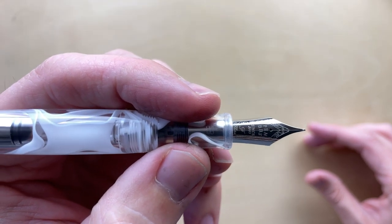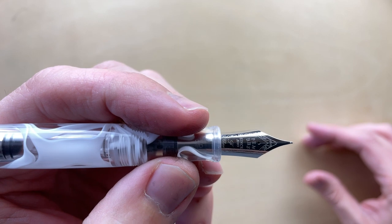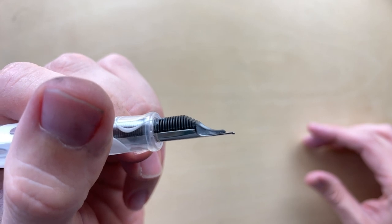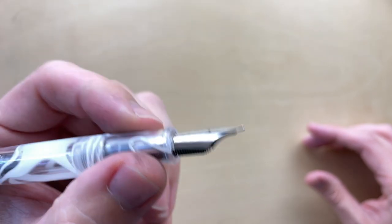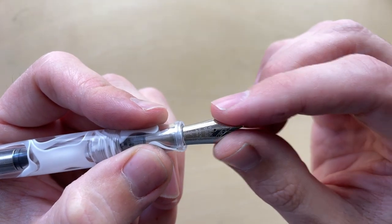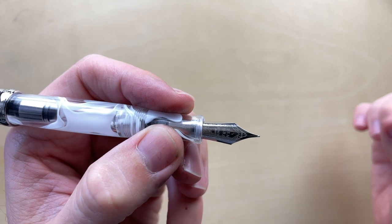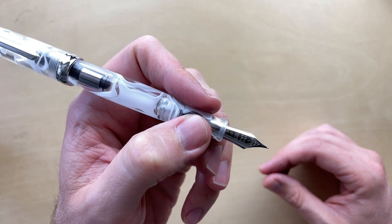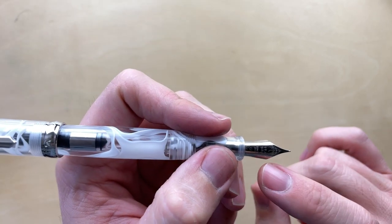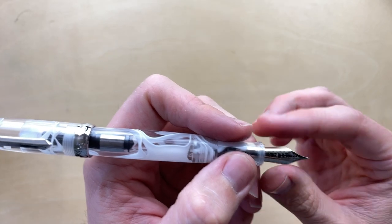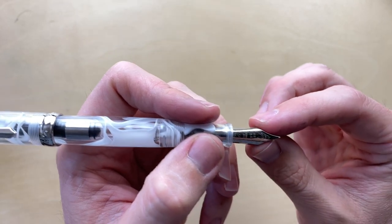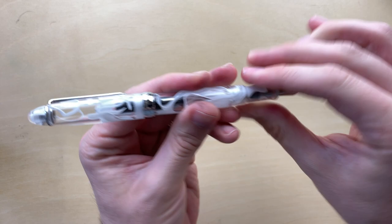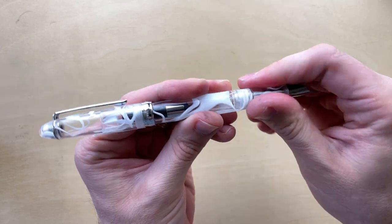We've got a PenBBS F fine nib. This is, I'm told, a waverly grind. It's got these little scalloped edges, so it's got a nice little shape. I really like the PenBBS nib, so I'm hoping this actually does perform the same as my 456. This is a 100% silver colored nib.